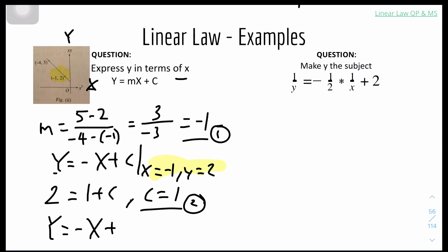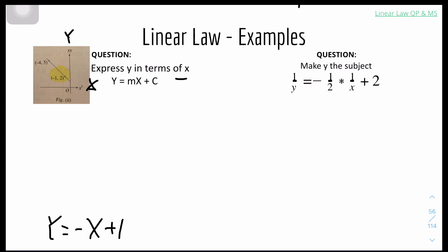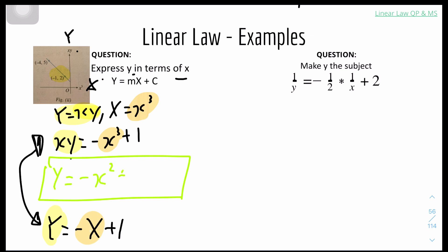You can't stop there. Remember how we substituted big Y and big X by these values, we have to put these values back into the equation. Big Y is xy as we know from the graph, and big X is x cubed. So we have to put the values back into the equation, so it will be xy equals minus x cubed plus 1. We have to express y in terms of x, so this is not y. Basically just divide the whole thing by x. The final answer is y equals minus x squared plus 1 over x.